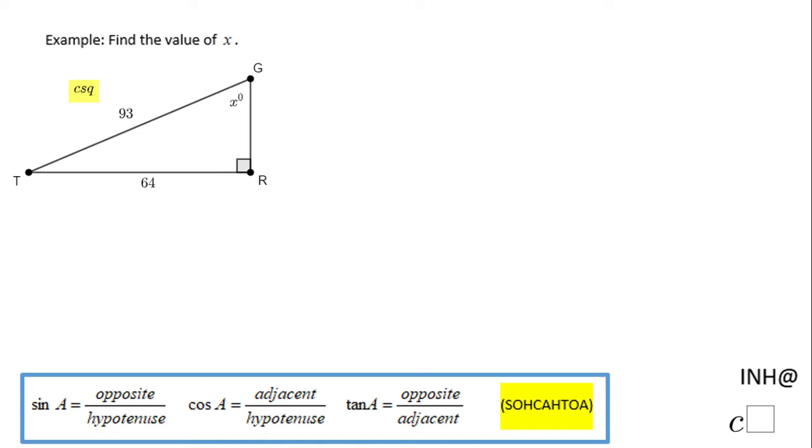Welcome or welcome back to InhalePathCisco. In this example, we're going to find the value of x. If you notice, x is nothing else than the measure of angle g.